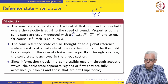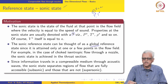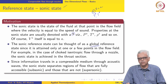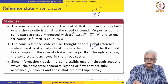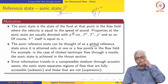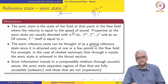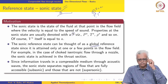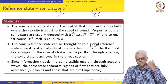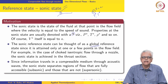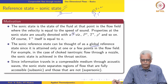The sonic reference state may be thought of as a global reference state because it usually occurs at only one or two points in the flow field. For example, in flow through a convergent-divergent nozzle, the sonic state is typically encountered at the throat, where the local fluid velocity equals the speed of sound. Such a flow is said to be choked, and we will explain the meaning of this when we discuss flow through nozzles.